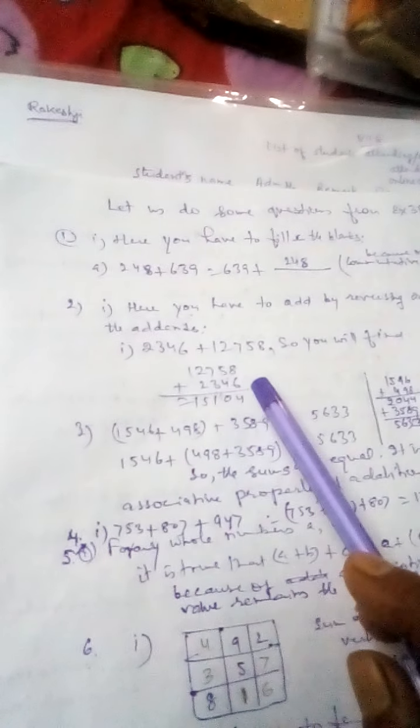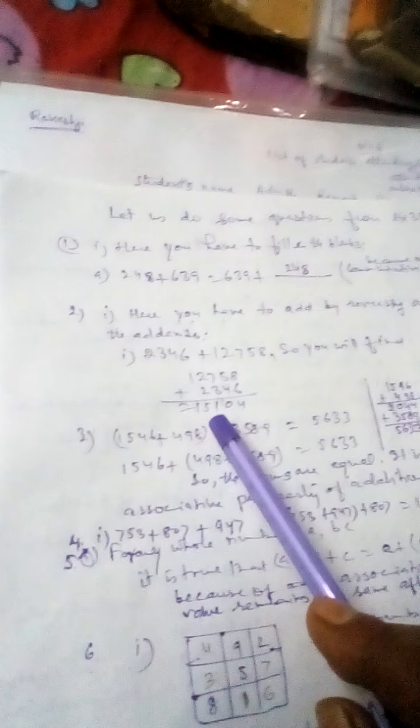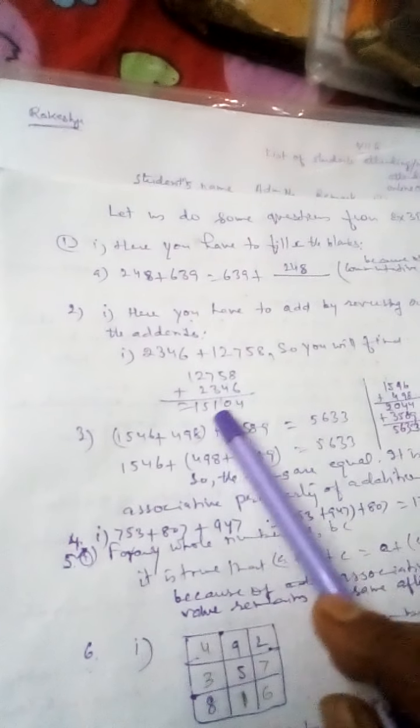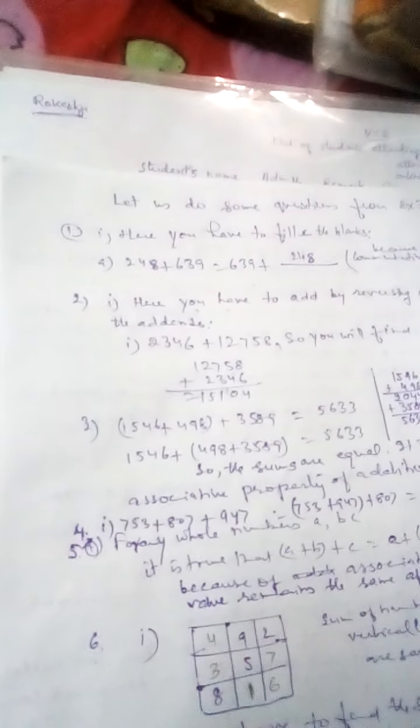Like 2346 plus 12758, if you reverse the order, it will be 12758 plus 2346. Then the value will be 15104.